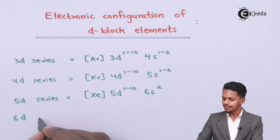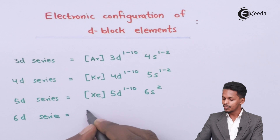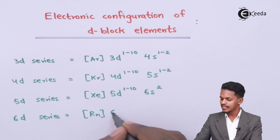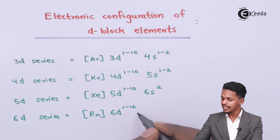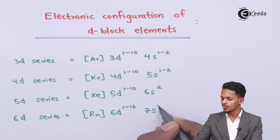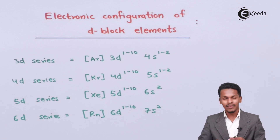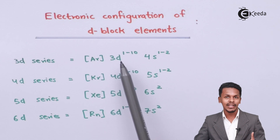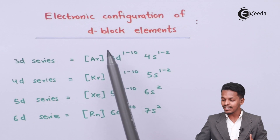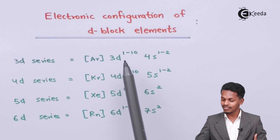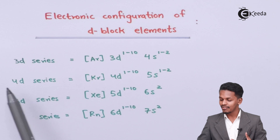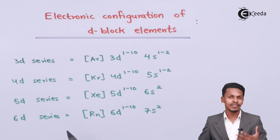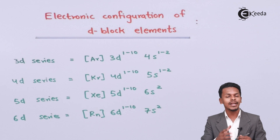For the 6d series, it starts with radon as the noble gas core, with 6d ranging from 1 to 10 electrons and 7s². The names 3d, 4d, 5d, and 6d come from the fact that the last electron enters the respective d orbital — for 3d series, the last electron enters the 3d orbital, and so on for 4d, 5d, and 6d.